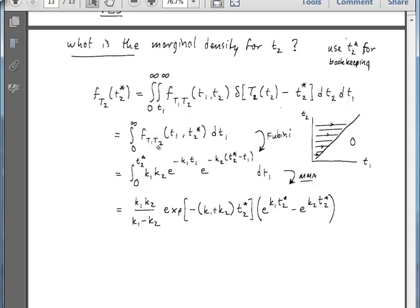But this sort of keeps track of all the bookkeeping for you. So now I have F, the joint probability, at T1 and T2 star, and this is being integrated from 0 up to infinity.